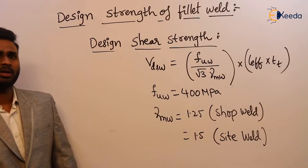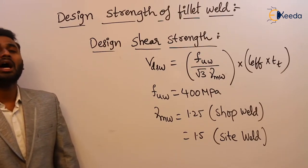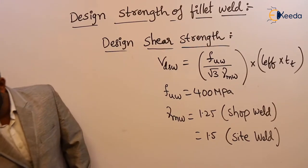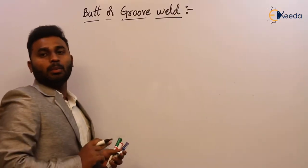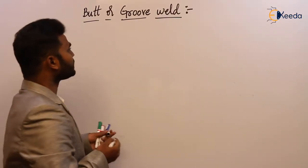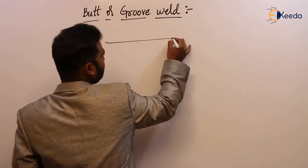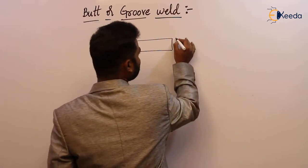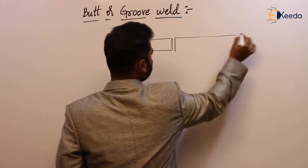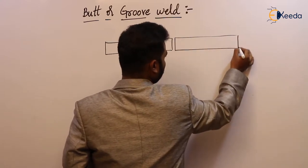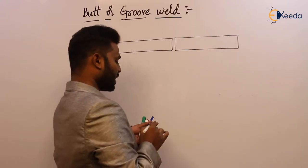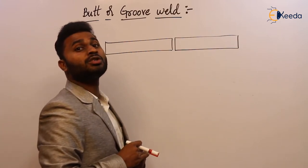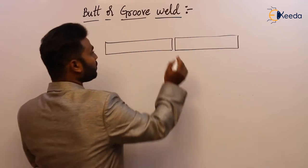Now, what is the next type of weld? Butt or groove weld. The next type of weld is butt or groove weld. If you see the diagram, these two are the members. If these two members are connected back to back by using a weld, then we are going to use butt weld for such a connection.